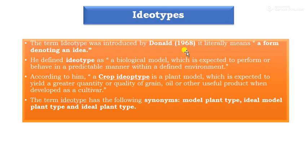First, the definition of ideotypes. The term ideotype was first introduced by Donald in 1968. It literally means a form denoting an idea. He defined ideotype as a biological model which is expected to perform or behave in a predictable manner within a definite environment. Ideotype is a concept to develop new plant architecture with respect to height, rooting pattern, or the orientation of the leaf as a model expected to perform well in a definite environment.